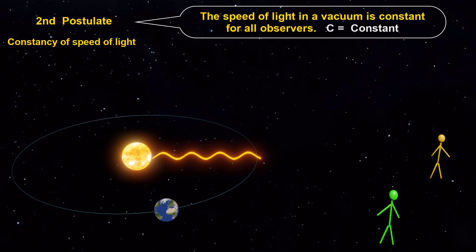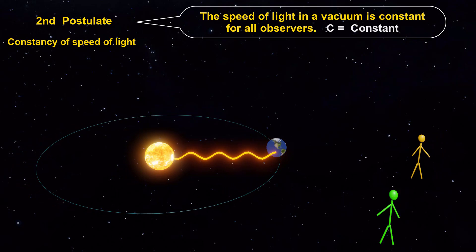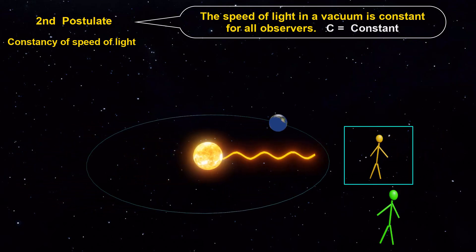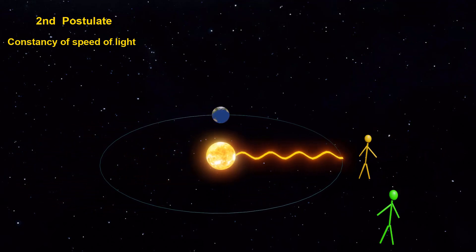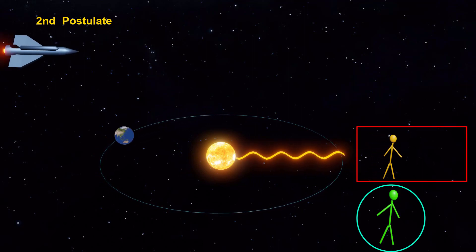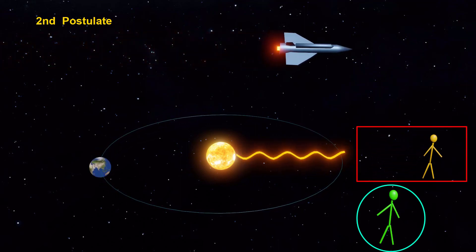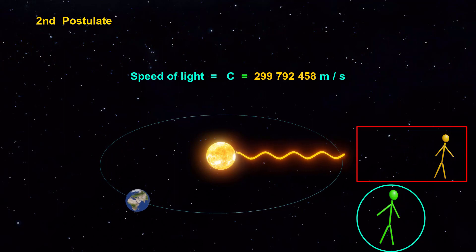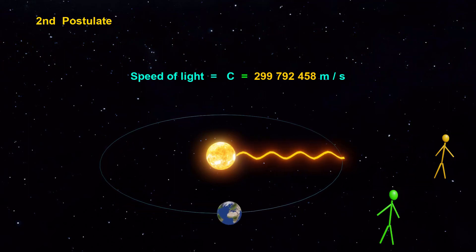The speed of light in a vacuum is constant for all observers regardless of the motion of the light source or the observer. Whether you are at rest, moving at a constant velocity, or traveling in a spaceship close to the speed of light, you will always measure the speed of light to be the same.